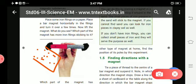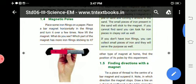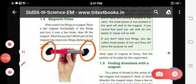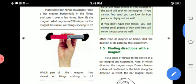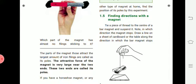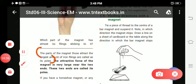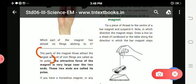Which part of the magnet has almost no filings sticking to it? So, the parts of the magnet that attract the largest amount of iron filings are called as its poles. Poles are the definition of magnet which attract the iron filings. The poles are called as its poles.